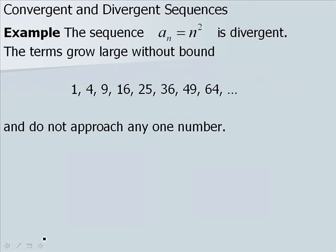A sequence that is not convergent is said to be divergent. For example, the sequence a sub n equals n squared is divergent — the terms grow large without bound and do not approach any one number.